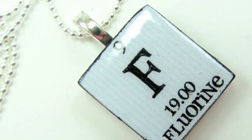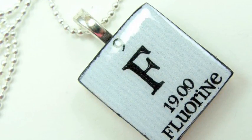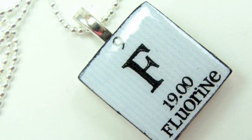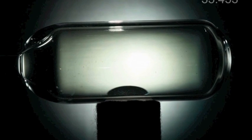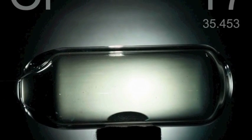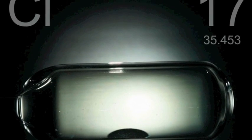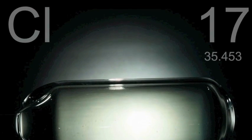Fluorine, discovered in 1886 by Joseph Moissan, has the highest electronegativity. Under fluorine, in the periodic table, is the element chlorine. Chlorine, which was discovered in 1774 by Karl Scheele, was named after the Greek word chloros, meaning green.